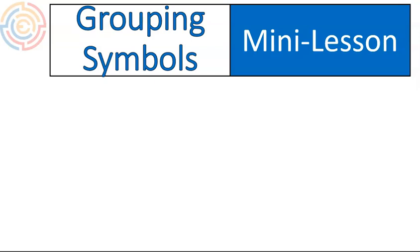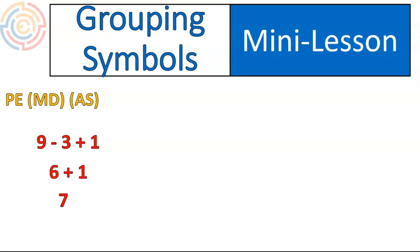Now let's talk briefly about grouping symbols. With our order of operations we could have a question like 9 minus 3 plus 1. We know you do subtraction and addition in the order it appears from left to right, so we would do 9 minus 3, which is 6, and 6 plus 1, which is 7. If I wanted you to do the adding first, I would add in a grouping symbol — see that? 3 plus 1. Now, because it's inside of a grouping symbol, we do that step first, and then we do the subtraction. So I would have 3 plus 1, which is 4, and then 9 minus 4 is 5.